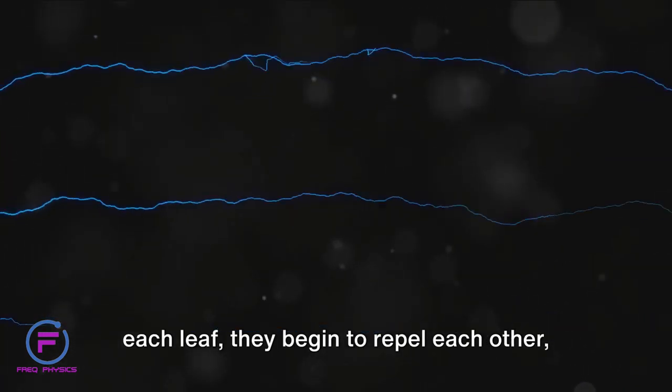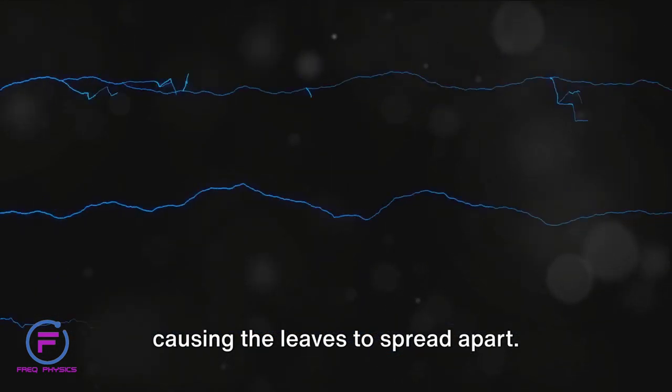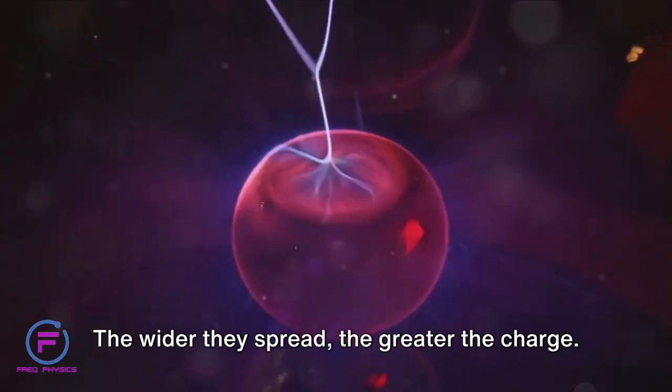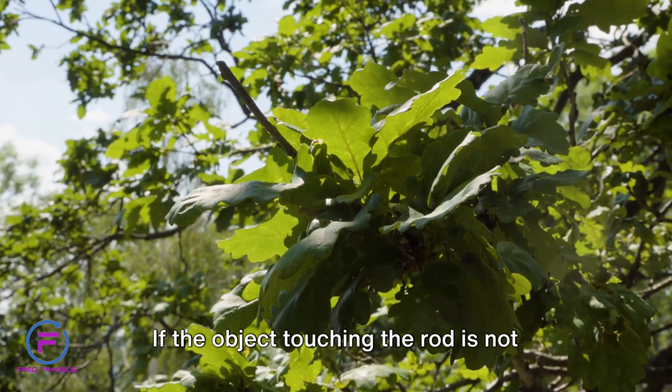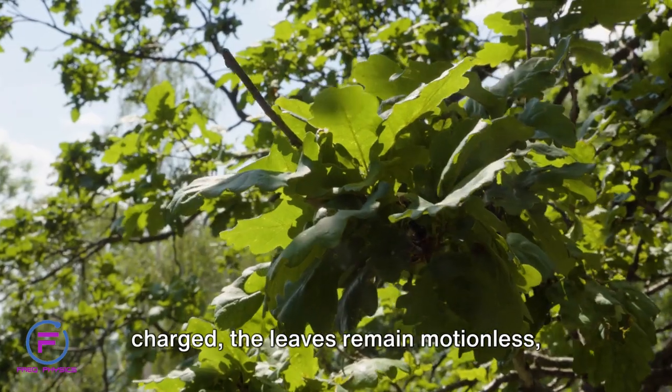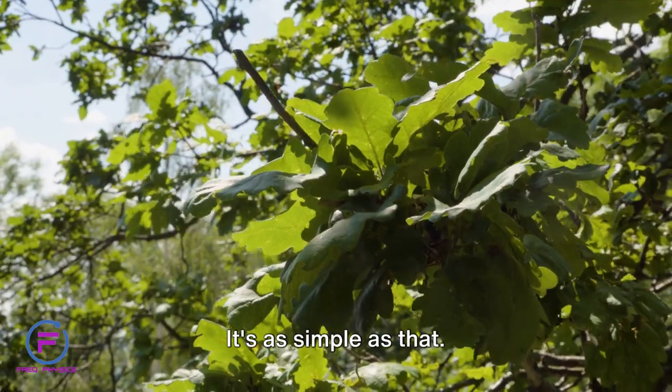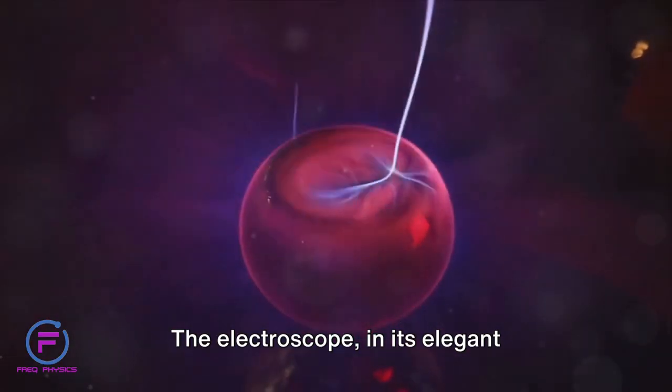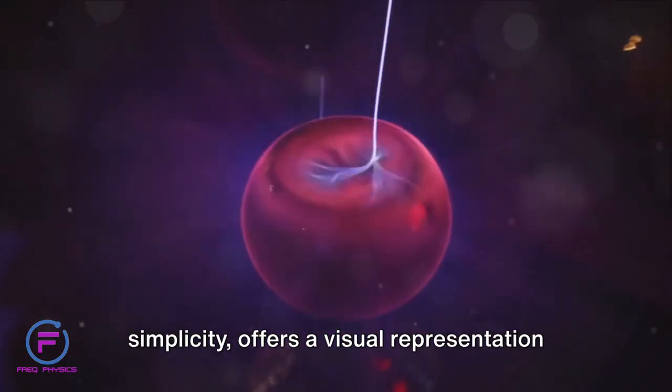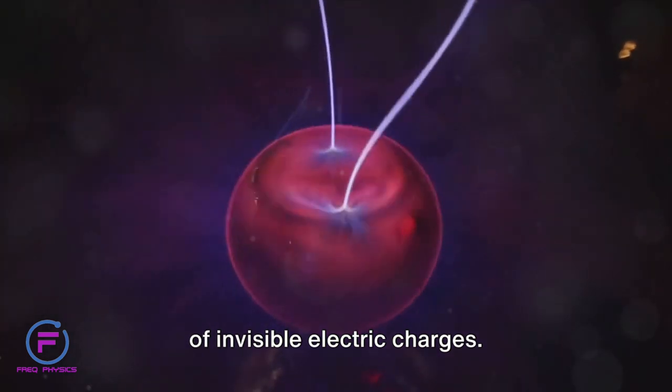Causing the leaves to spread apart. The wider they spread, the greater the charge. If the object touching the rod is not charged, the leaves remain motionless, indicating a neutral charge. It's as simple as that. The electroscope, in its elegant simplicity, offers a visual representation of invisible electric charges.